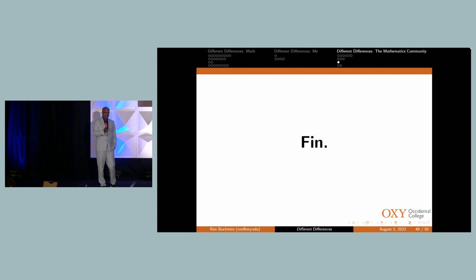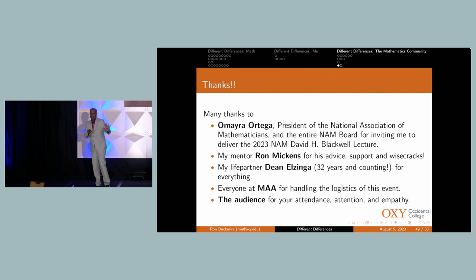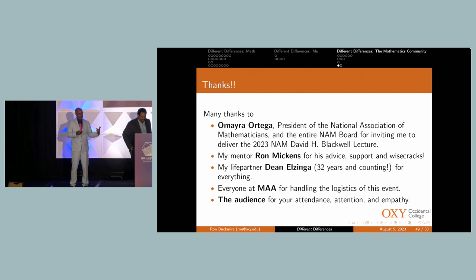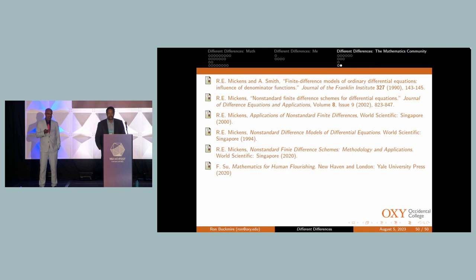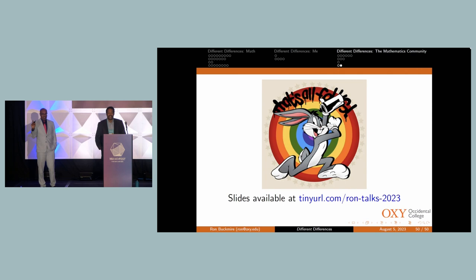And so there are these actions that have been taken to help the math community broaden participation of people who have different differences, and I'm just talking about the sort of ones that have cropped up since 2020. There are also ongoing programs, like I mentioned. MAA has NREP. MAA has the Tensor Summer program as well. Those are great, and they should continue. There's EDGE. Yeah, these are all great. I think that is it. Thanks. But this is sort of like Lord of the Rings. There's, that's the first ending. I'm going to thank people. I want to thank O'Meara Ortega, Ron Mickens, my life partner, Dean Elzinga, everyone at NAM, and the audience for your attention, attendance, and empathy. Thank you. Here's some references, and then here's my last ending. If you want to find my slides, they're always at tinyurl.com, ron-talks.2023. And I'm really... We have a little bit of time for a question or two. Please use the microphone.